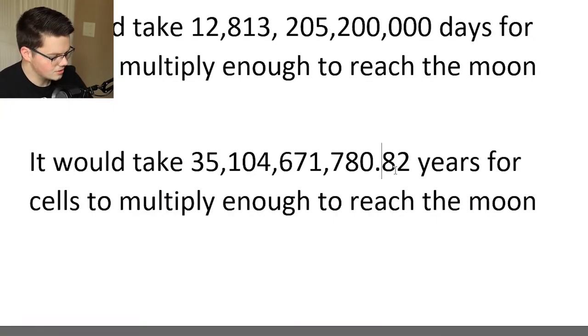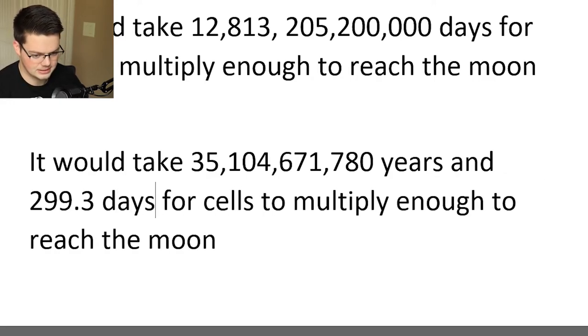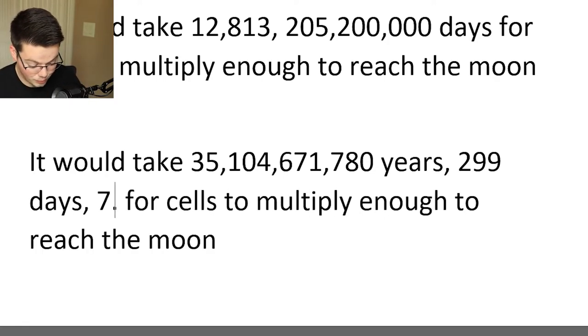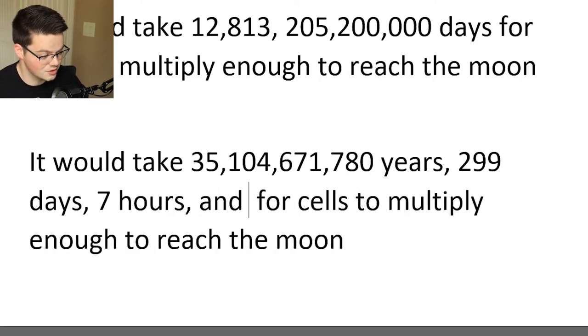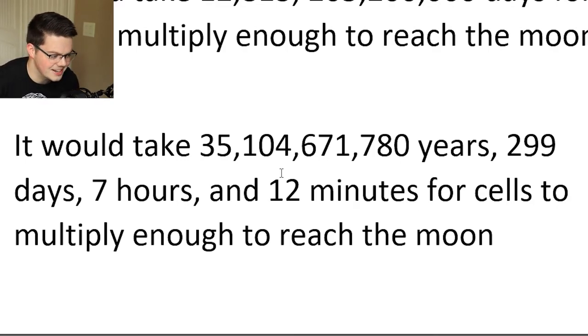So what is 0.82 years in days? That's 299.3 days. And what is 0.3 days in hours? 7.2 hours. Which means we need to go to minutes — that's 12 minutes. So the final answer: it would take 35 billion, 104 million, 671 thousand, 780 years, 299 days, 7 hours, and 12 minutes for cells to multiply enough to reach the moon, because of course we all needed to know that.